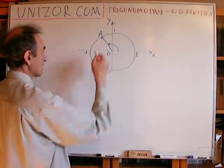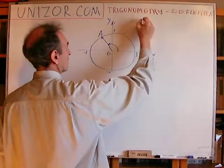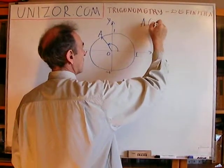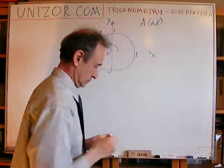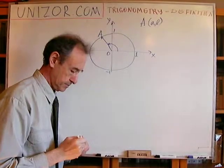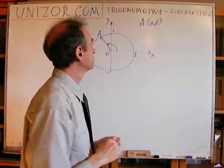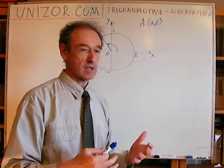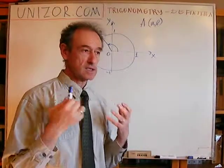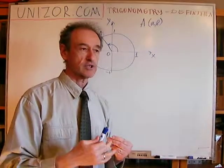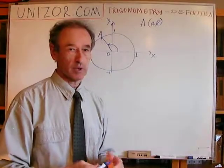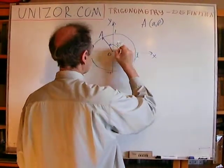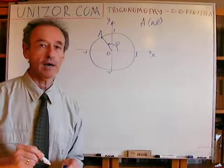Now, this point A will have certain coordinates. Let's call them A and B. The position of the point, as I was saying, is basically reflecting the angle we are talking about. Let's say the angle — we use the Greek letter phi for this.